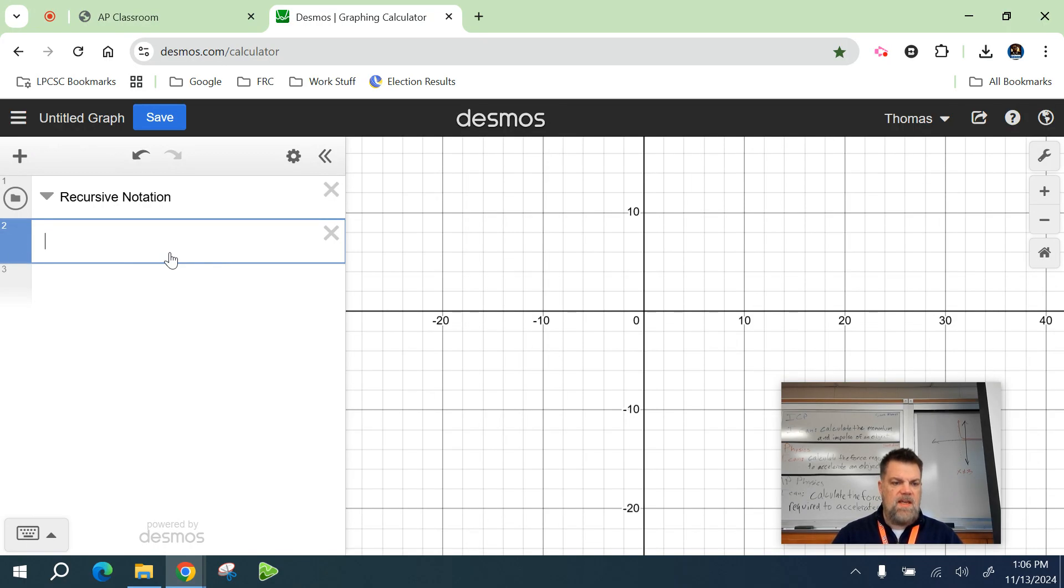So I'm just going to make up one real quick. I'm going to say f of n is equal to f of n minus 1.